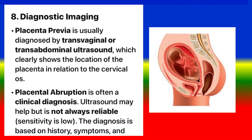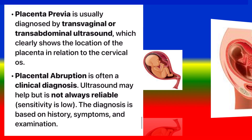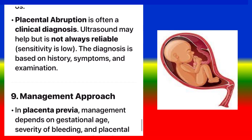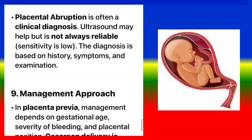Diagnostic imaging. Placenta previa is usually diagnosed by transvaginal or transabdominal ultrasound, which clearly shows the location of the placenta in relation to the cervical os. Placental abruption is often a clinical diagnosis; ultrasound may help but is not always reliable, as sensitivity is low. The diagnosis is based on history, symptoms, and examination.